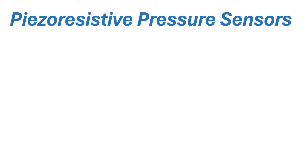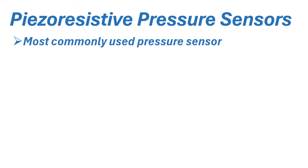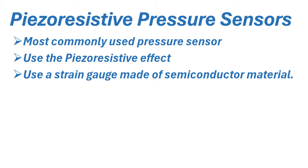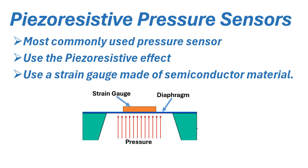Piezo resistive pressure sensor is the most commonly used pressure sensor. This sensor uses the piezo resistive effect to calculate the pressure. These sensors use a strain gauge made of semiconductor material such as silicon. This strain gauge is attached to the measuring diaphragm inside the sensor.